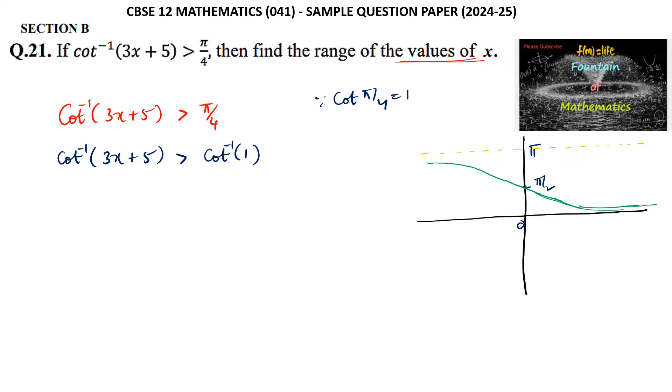It's a decreasing function. When x goes from 0 to 1, the graph is decreasing. For all positive values, cot⁻¹(x) is decreasing.